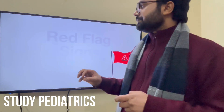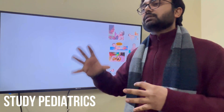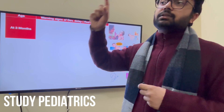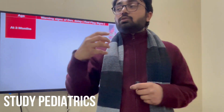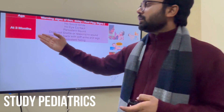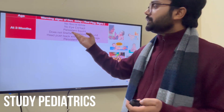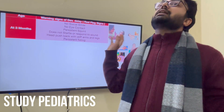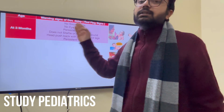Now, the red flag signs in development. It is very important to remember what red flags should prompt referral. At 3 months, if the child does not have the social smile (which should appear at 2 months), that is a red flag. Also: no eye contact, persistent squint, does not startle or respond to sound, head lags back or is pushed back with stiff arms, stiff arms and legs, and persistent fisting — these are early signs of cerebral palsy.